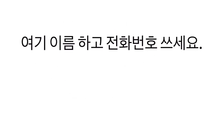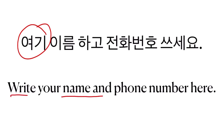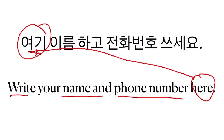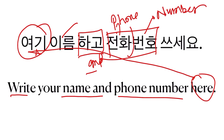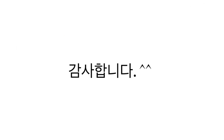Yogi irum hago chana ponu susayo. This is something you will be asked a lot when you go to a bank to open an account or fill up forms. The English translation is: Write your name and phone number here. Yogi is here, irum is name, hago is and, chana ponu is phone number — chana is phone, ponu is number. Susayo comes from sida meaning to write. That's it for today's practice session. I hope you found it helpful. Kamsaamnida.